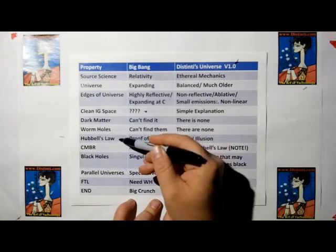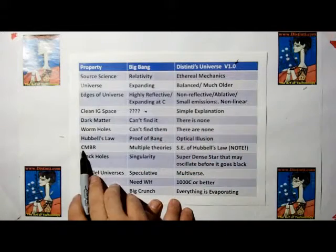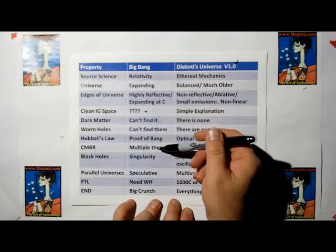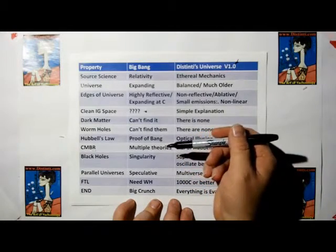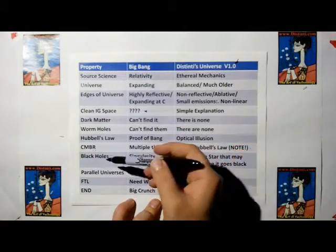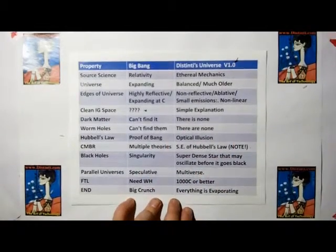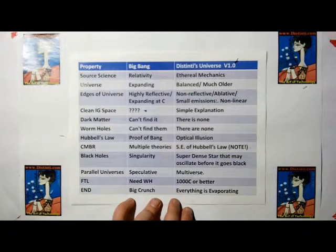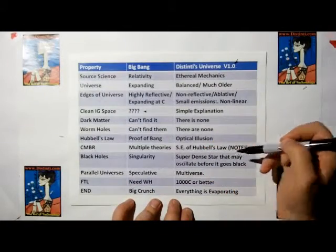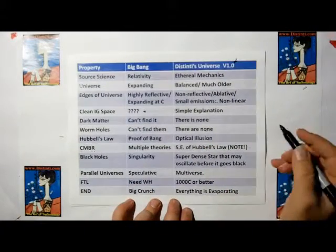I'm going to show you that Hubble's law is simply an optical illusion. Cosmic microwave background radiation, they actually have multiple theories. They say it's well explained, but then they have multiple theories explaining it, so I don't know what they're talking about. Black holes, they say is a singularity. I'm going to show you that if you have a mathematical equation that comes up with a singularity, then you're not doing proper science. I'm going to show you that black holes are just super dense stars that may oscillate before they finally go black.